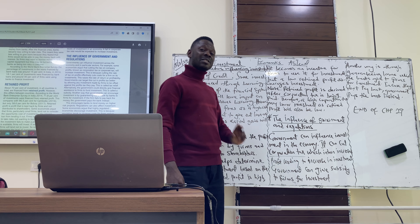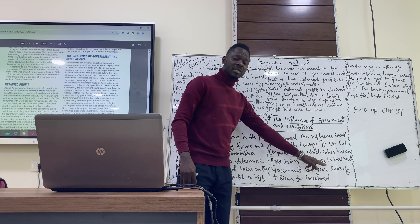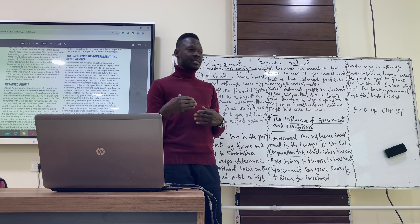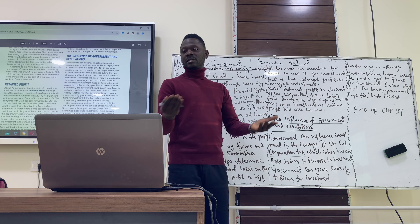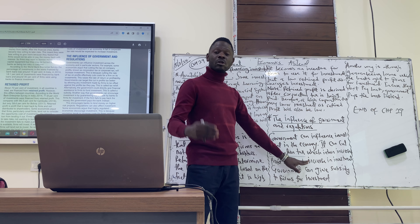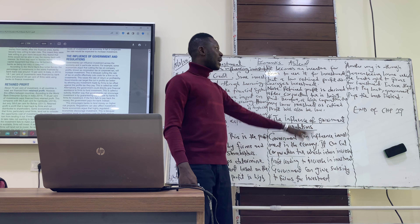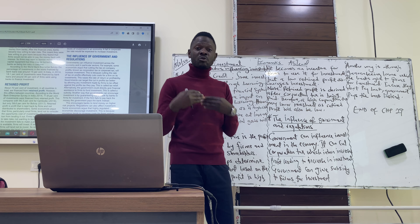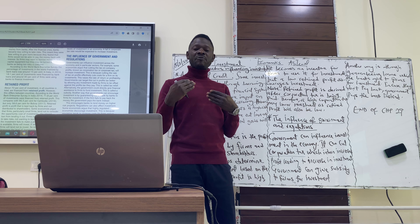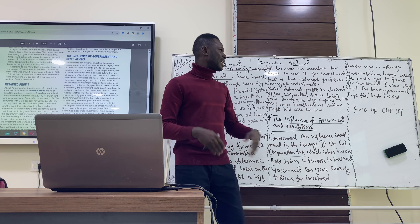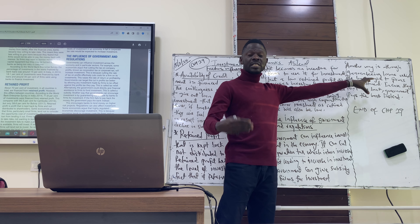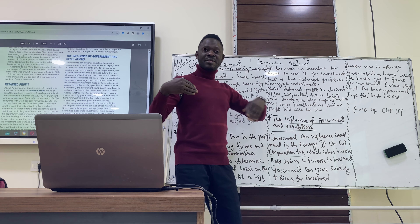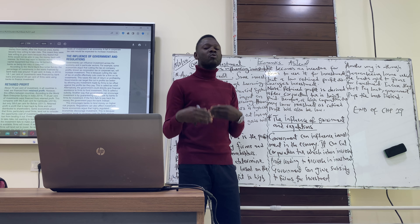Another way government can influence investment is through subsidies. Government can financially help firms that want to invest by giving them aid or grants. Subsidies can also influence investment. Another way is through guaranteeing loans — banks give the loans to firms, but in case the firms do not pay back, the government will pay instead. This encourages banks or financial houses to give out loans because they know if the debt goes bad, the government will pay for it.